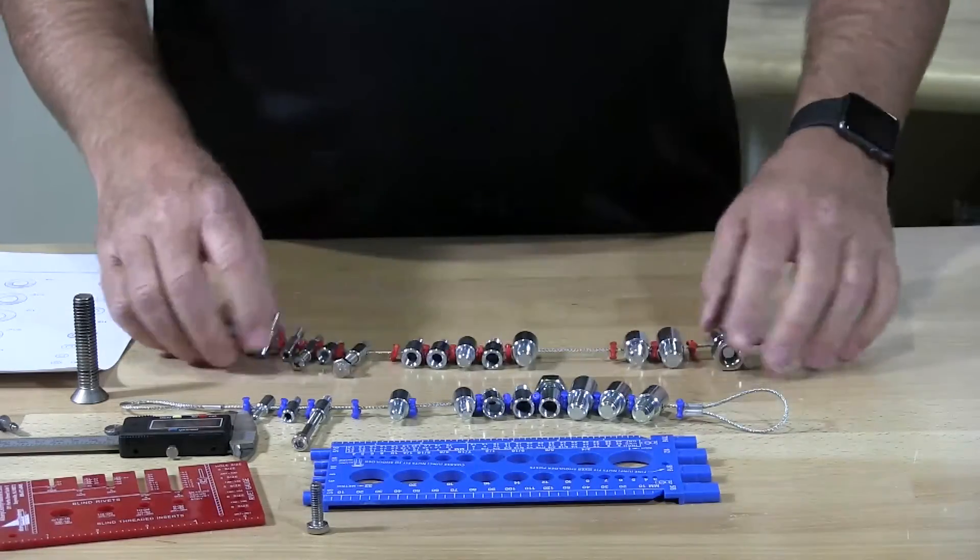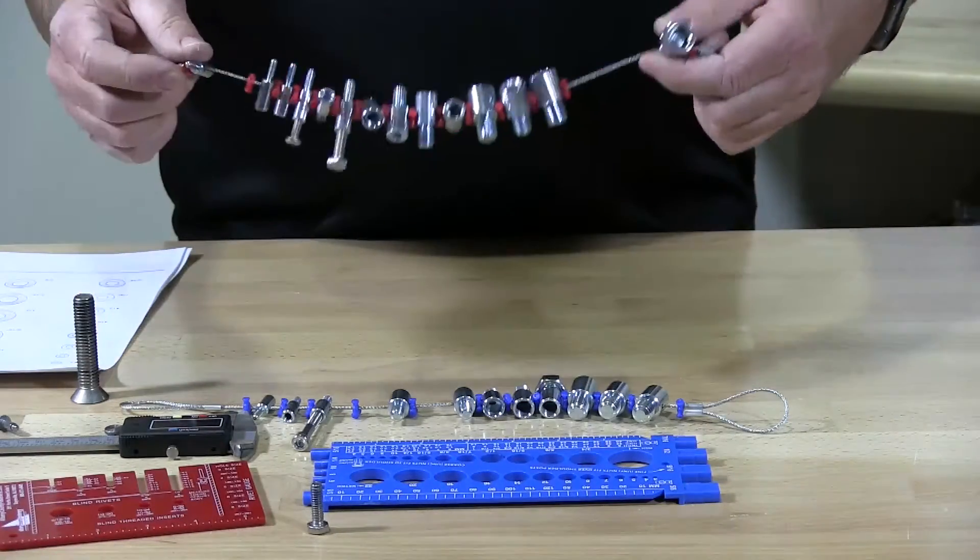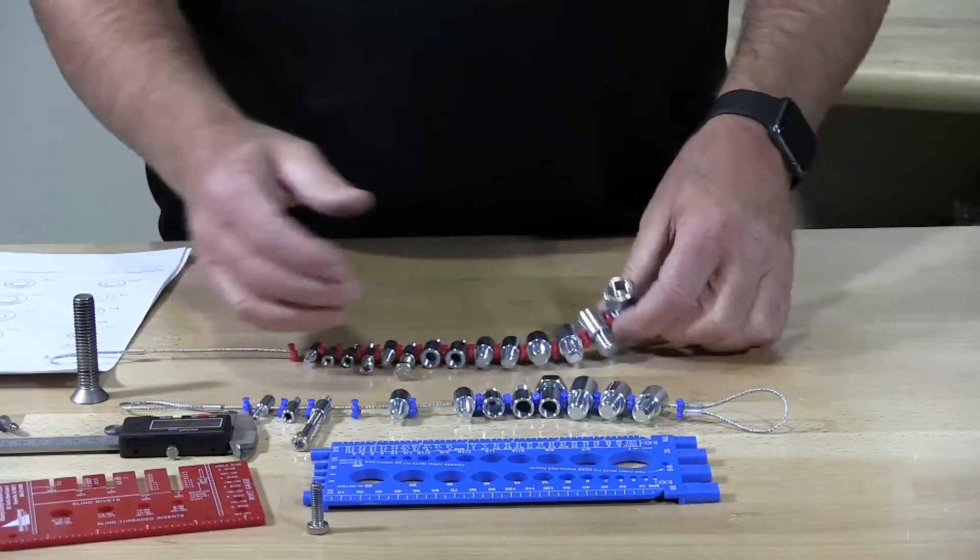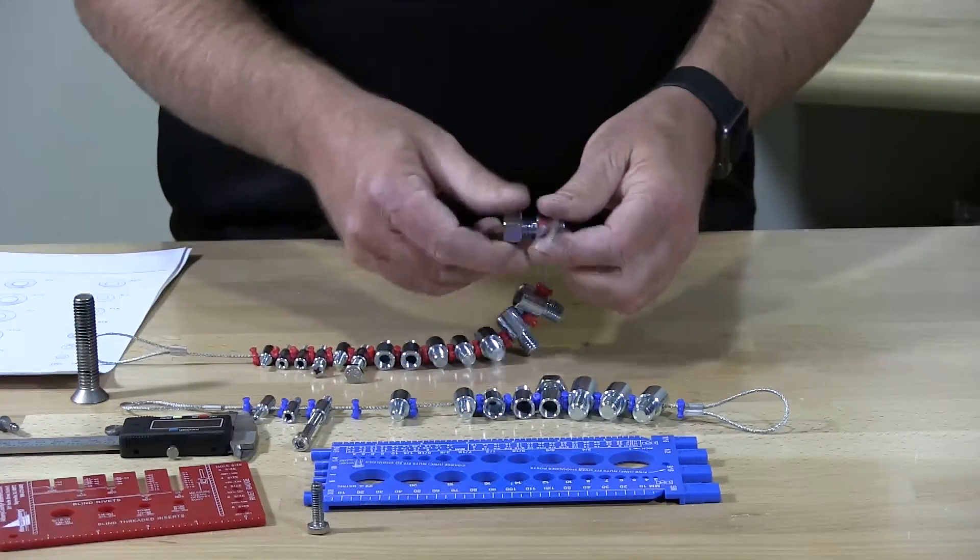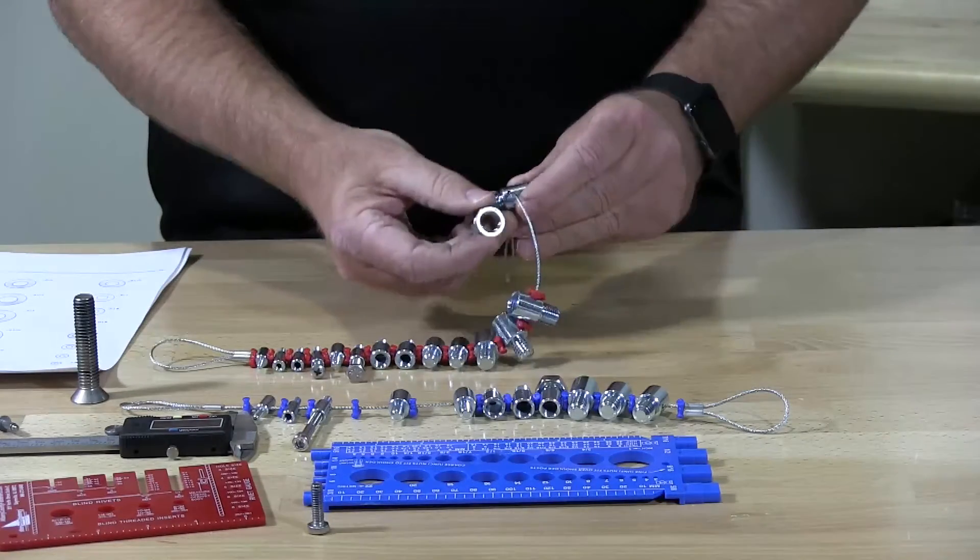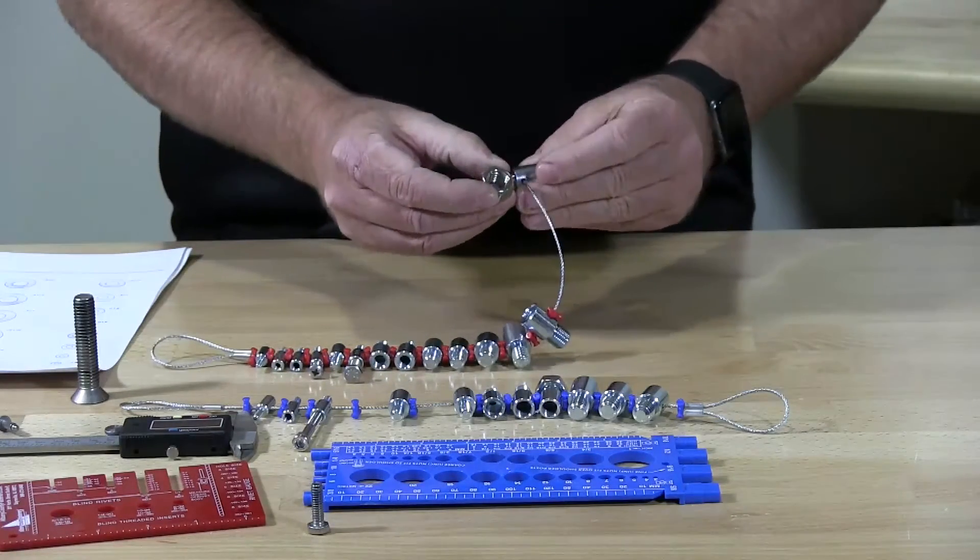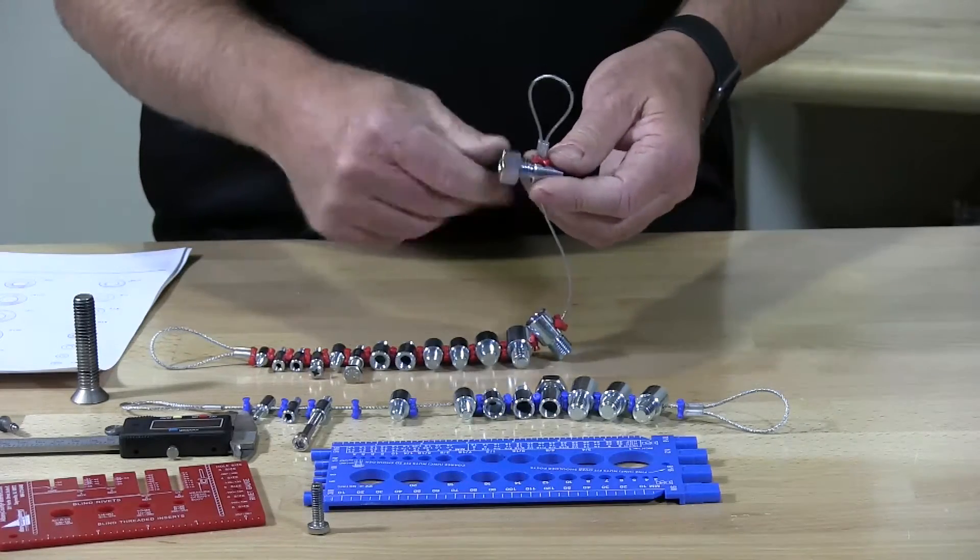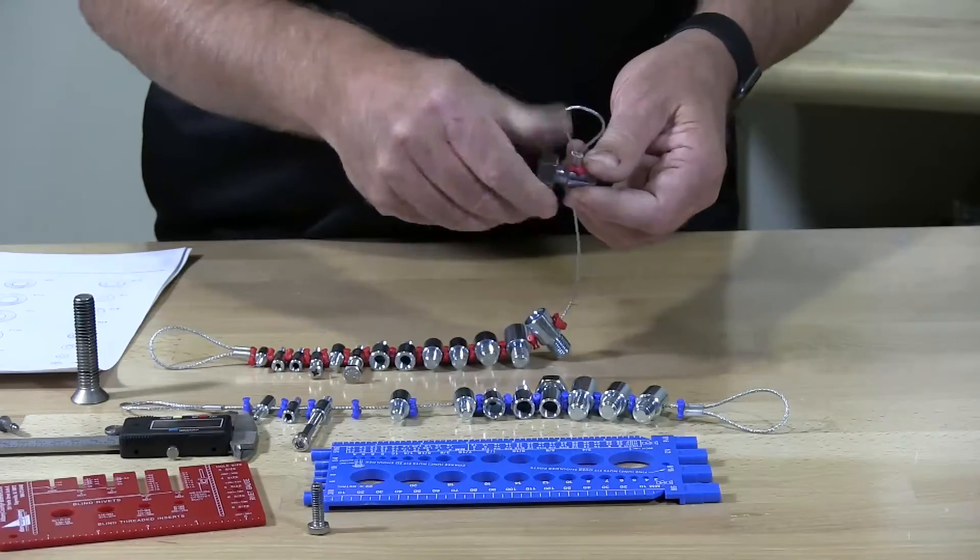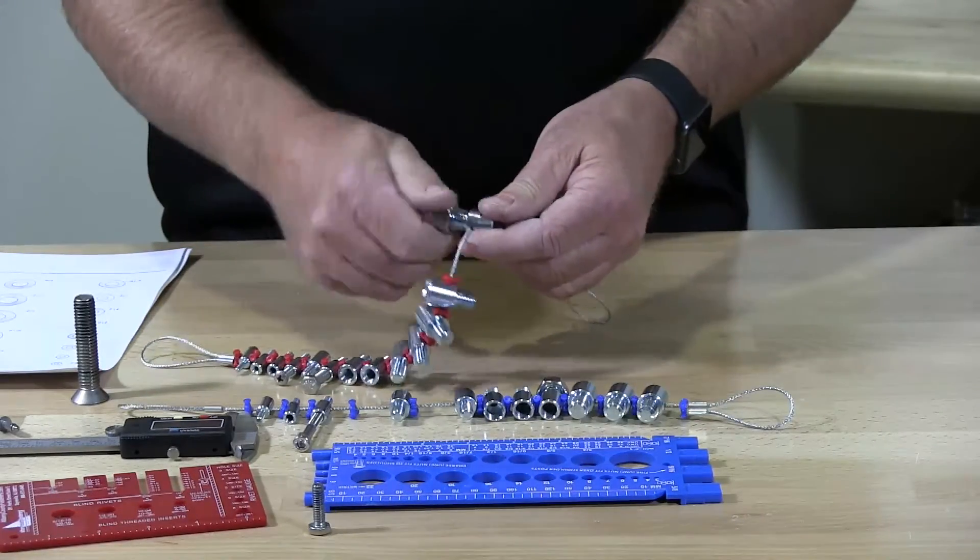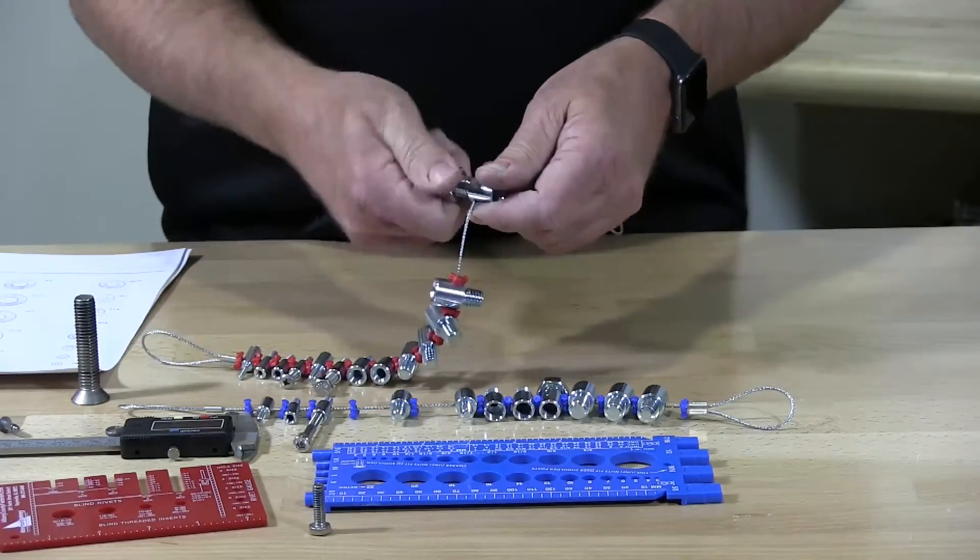We have another thread gauge. This is for imperial sizes. This is perfect for your shop. You've got to have it. Here's a nut. This is half 13. Put the nut on. You can find what size that this will fit on. This is half 20. It doesn't work. It doesn't go on.